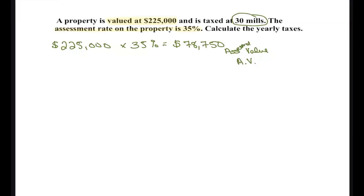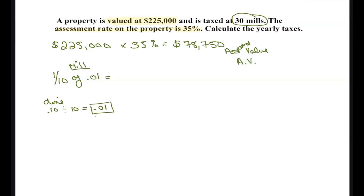A mill is one-tenth of one cent — just like a penny is one-tenth of 10 cents. If you take a dime, which is 10 cents, and divide it by 10, you get 0.01 in the calculator. So a penny is one cent. A mill is one-tenth of one cent, so if you take that one cent and divide by 10, what do you get? 0.001.